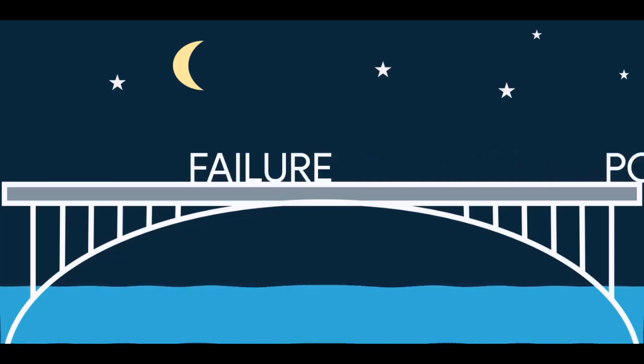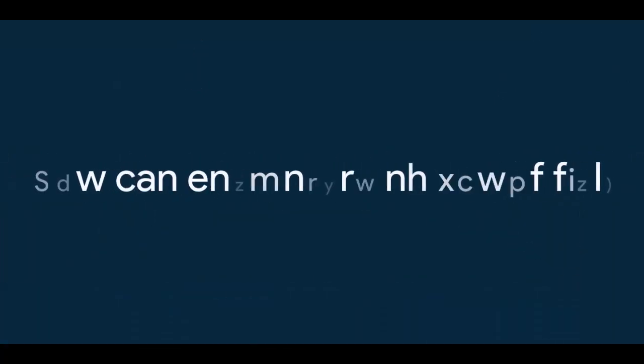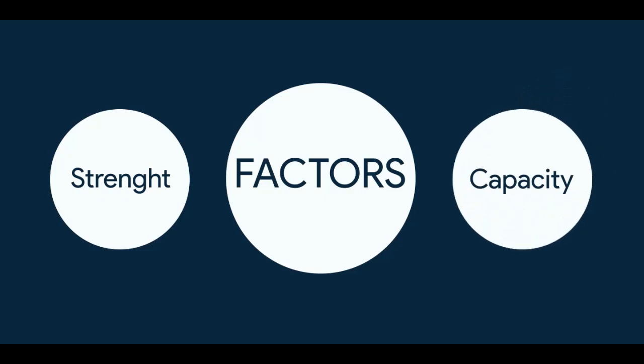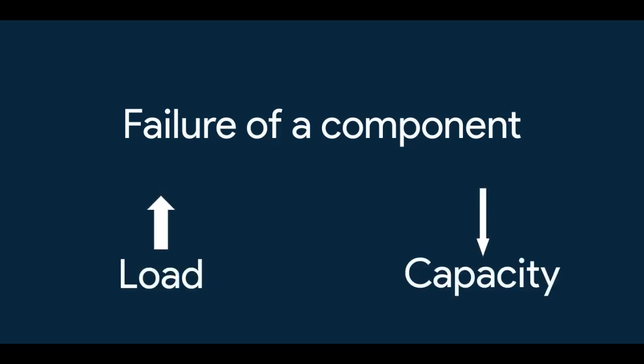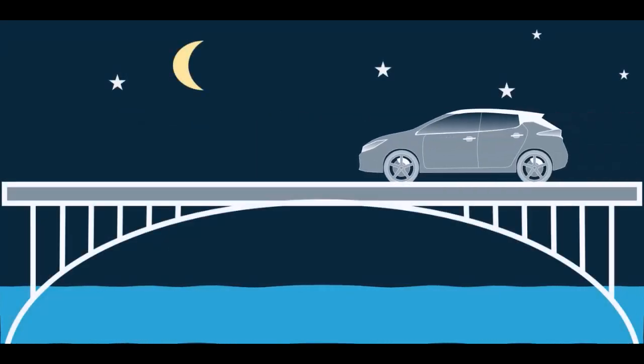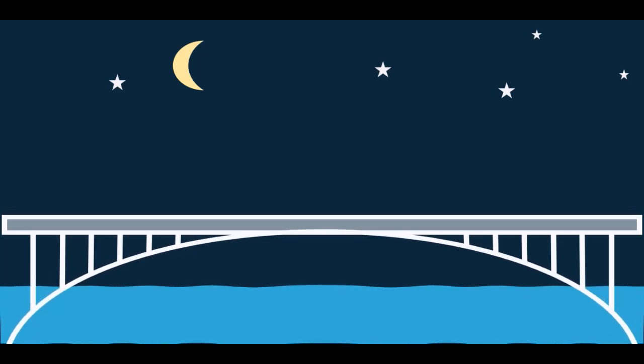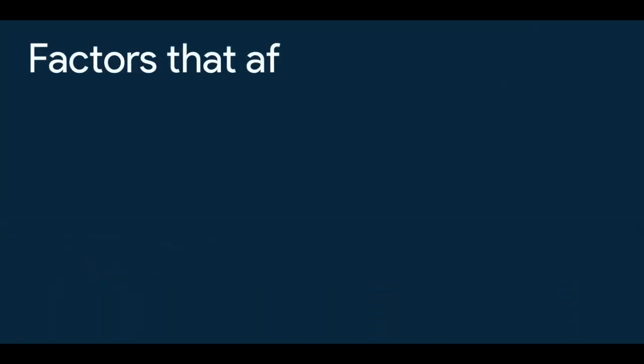Once you know what is failure point for your application, then you can move to the next step, that is understanding how engineered stuff can fail. This basically means understanding the factors for which you need more strength or more capacity. When we say failure of a component or a device, it is basically due to two reasons: that is increase in load or decrease in capacity. Like a bridge may fall if it's overloaded, or the material has lost its stress bearing capacity. The general factors considered while calculating factor of safety are as follows.